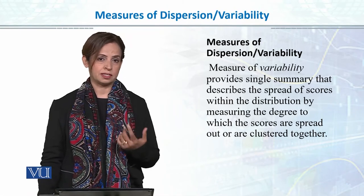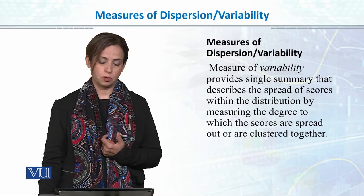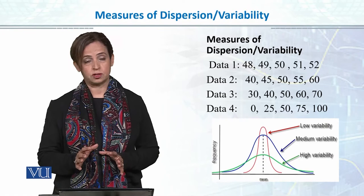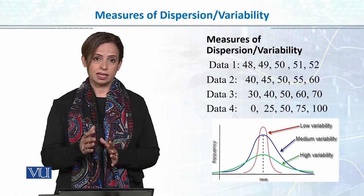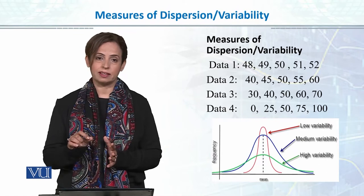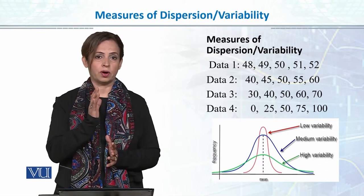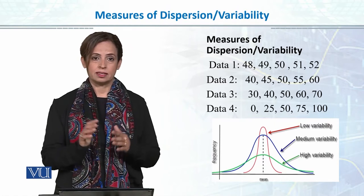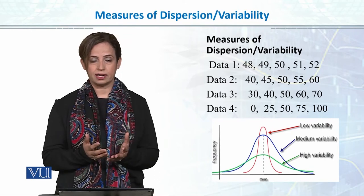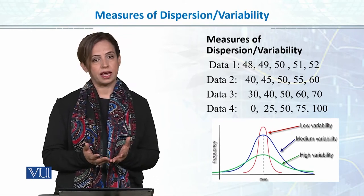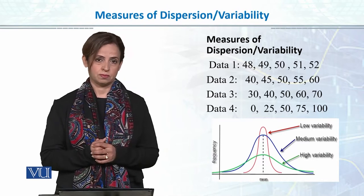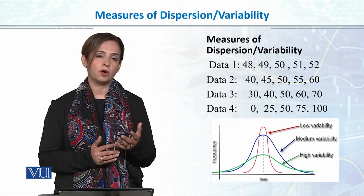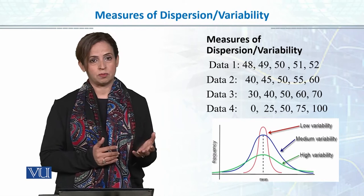Let's look at a few examples to see how measures of dispersion are important. On this slide, I have put four sets of data. As mentioned in the previous lecture, when data is symmetrical and smooth, the mean and median values are equal. In data one, these are scores of five students: 48, 49, 50, 51, and 52. The mean value is 50, so if somebody asked how students performed on the test, I'd report 50 as the average.